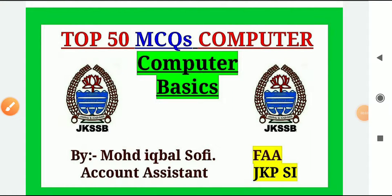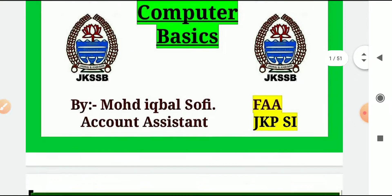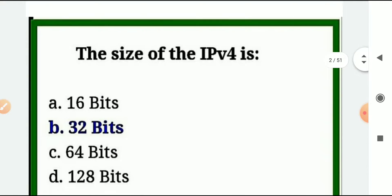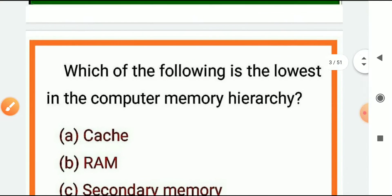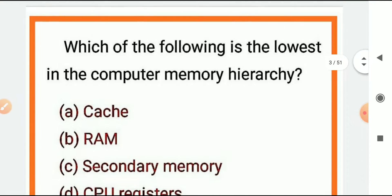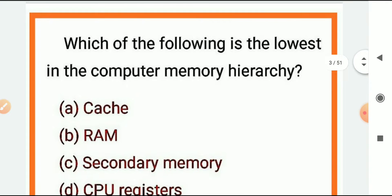Welcome friends to top 50 MCQs in computer science. Let's start. The first MCQ is the size of IP version 4, Internet Protocol version 4 size: 32 bits. Next is which of the following is the lowest in the memory hierarchy computer memory.